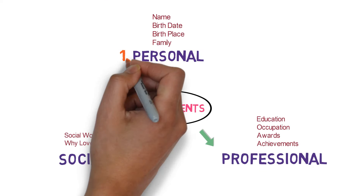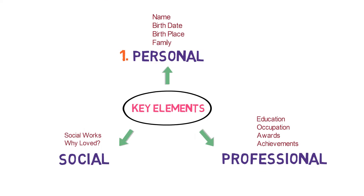Start with the personal details, including name, date of birth, place of birth, and family background. Then write the professional details, including education, current occupation of the person, awards or recognition, and any achievements. And finally, write the social work or the reason why society admires him or her.